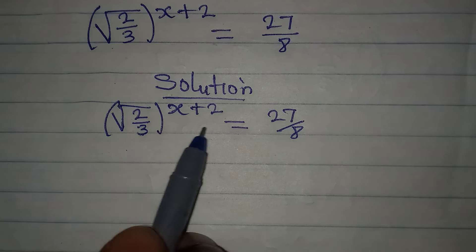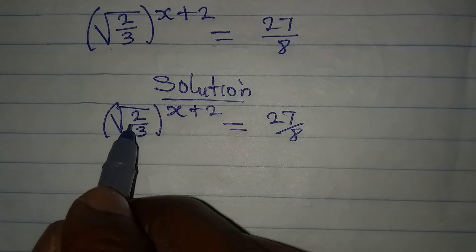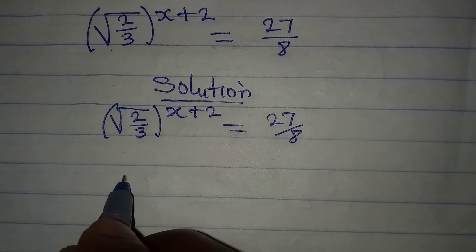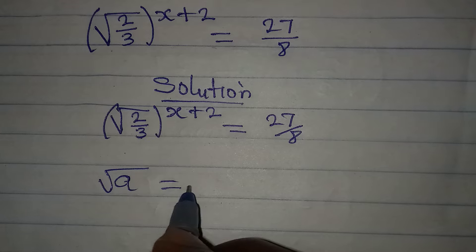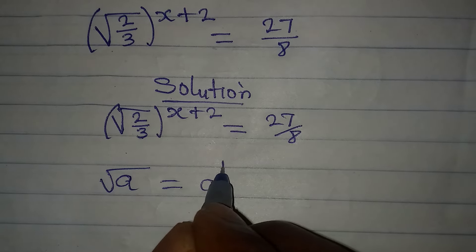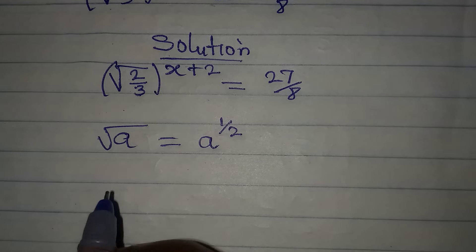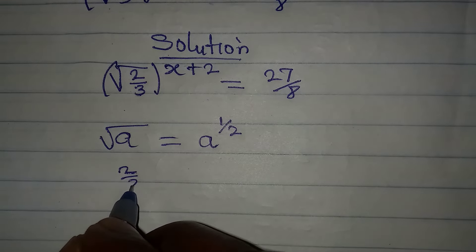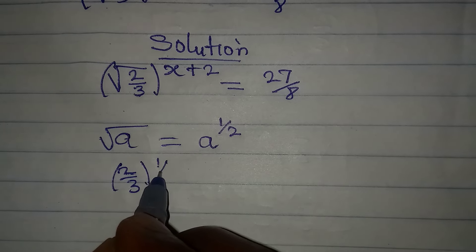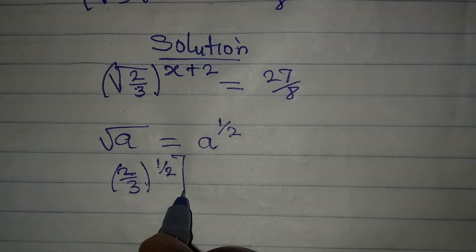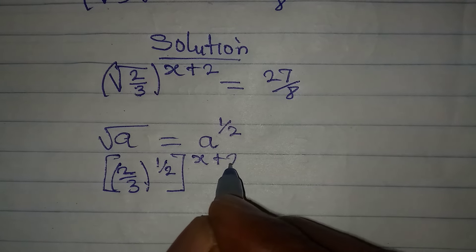To do that, remember that the square root of a is the same thing as a to the power of 1 over 2. So I will do the same thing here and write 2 over 3 to the power of 1 over 2, and then the power of x plus 2 will still appear.